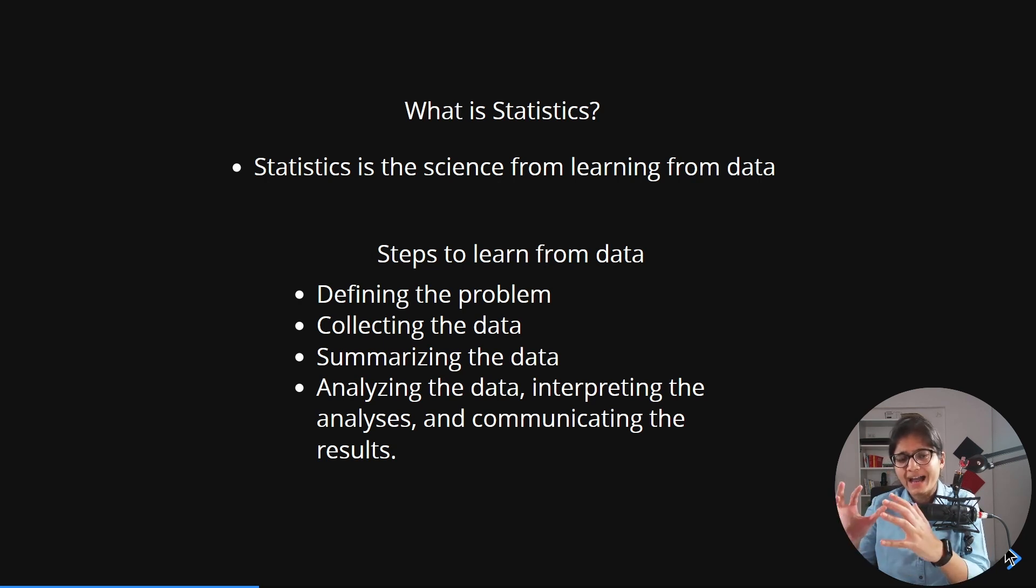The last important part is: now I know the problem statement, I have collected the data, I'm summarizing the data, and the last important point is that after doing all these, we need to analyze and interpret that analysis. Meaning, is there any null values or not? Are there any outliers present in the data or not? What do we mean by outliers? Any exceptional value out of the way.